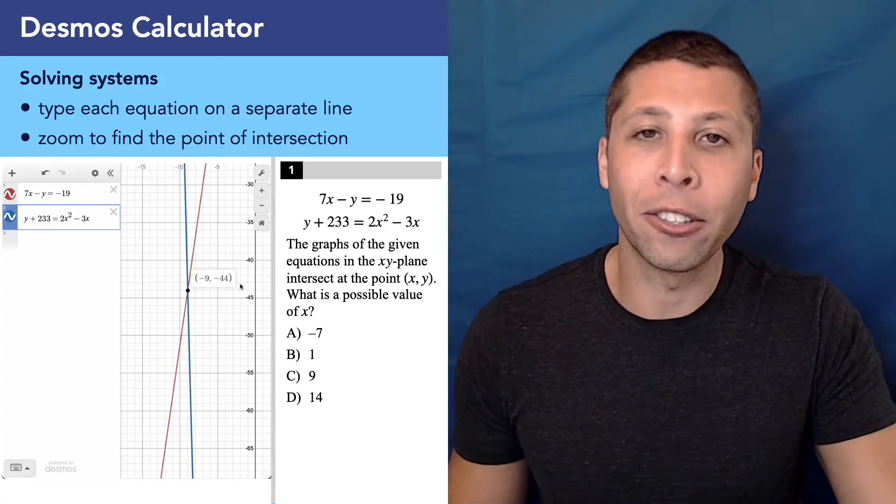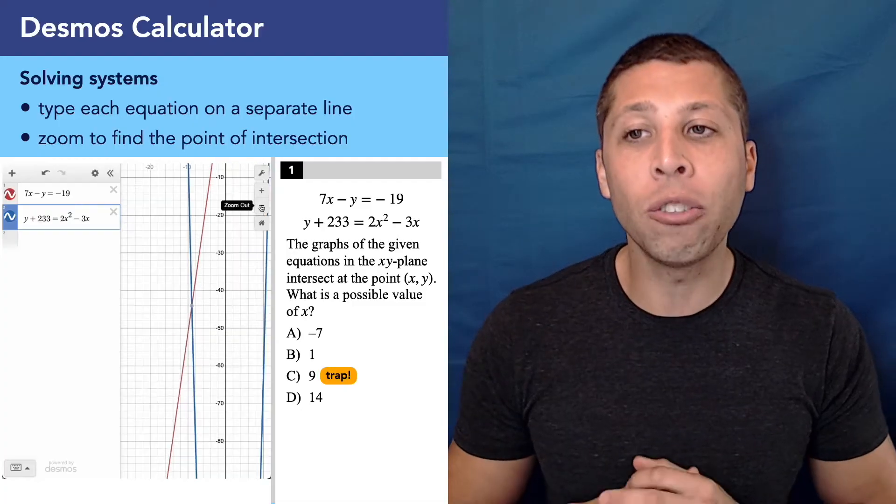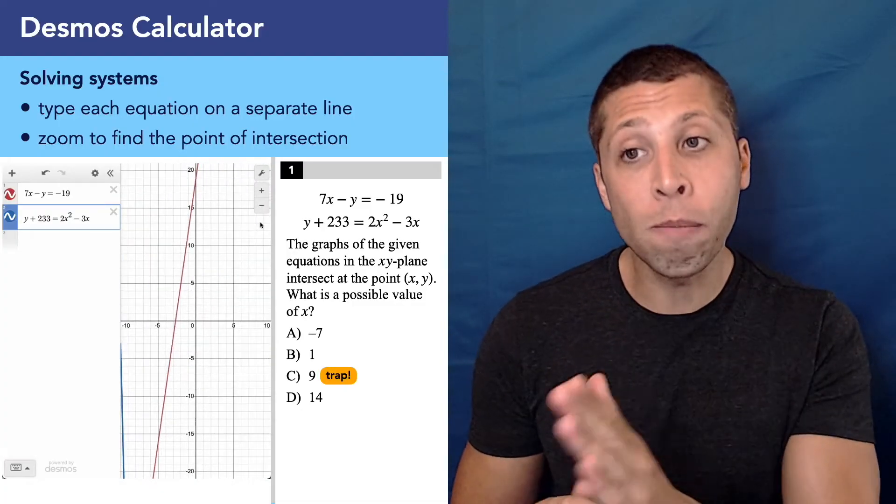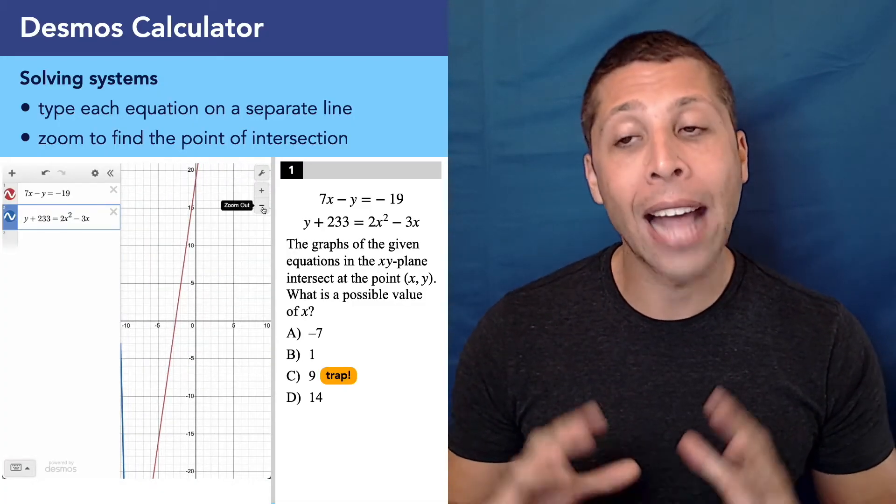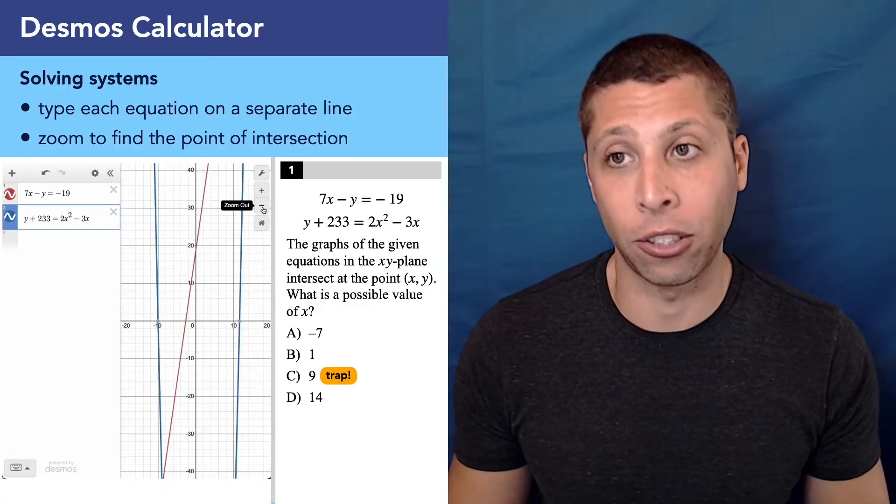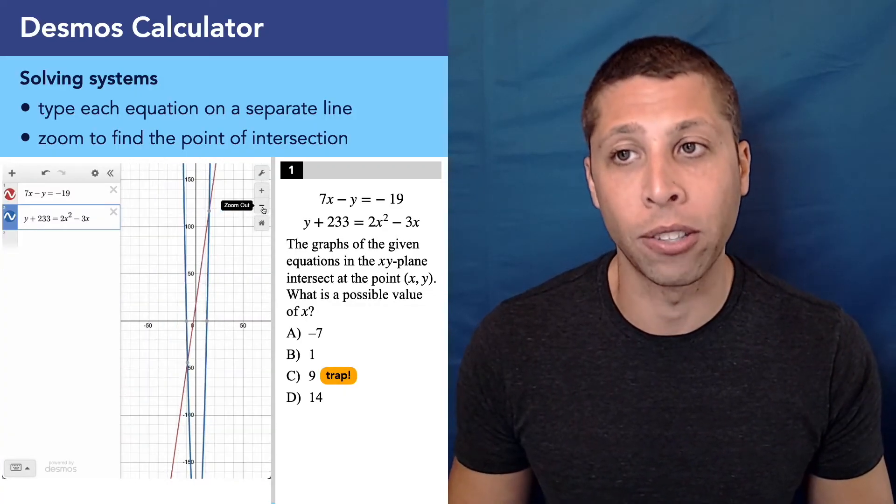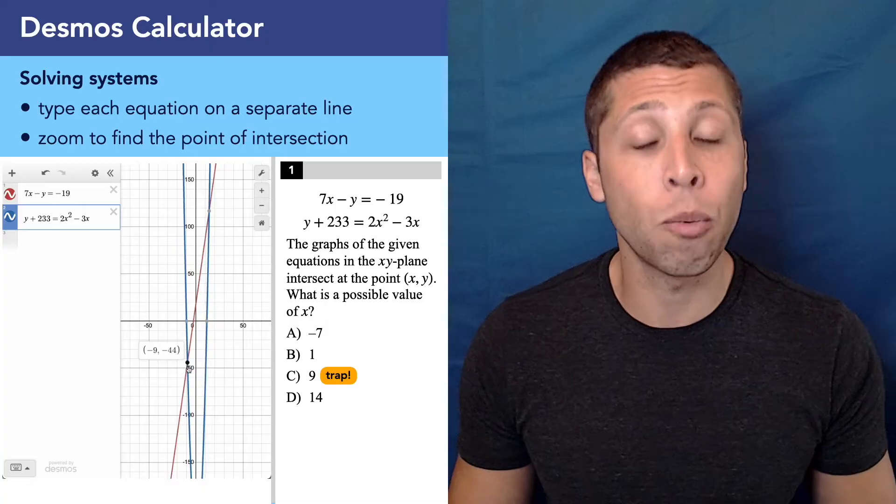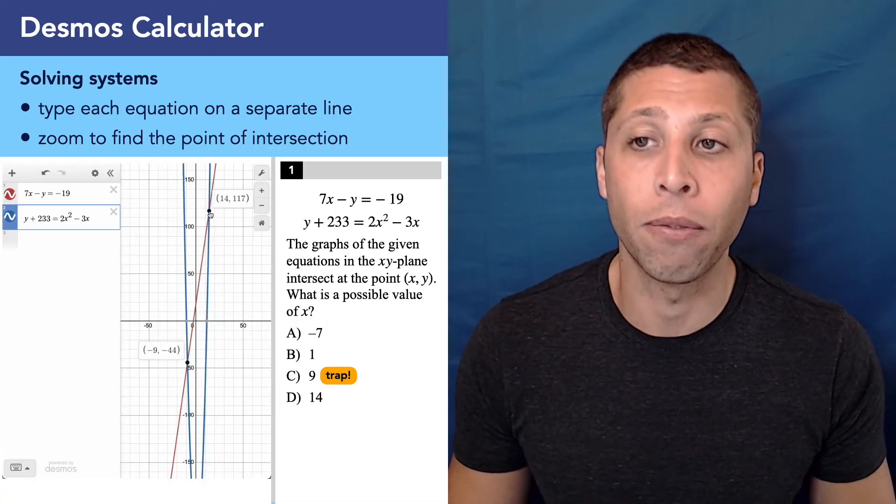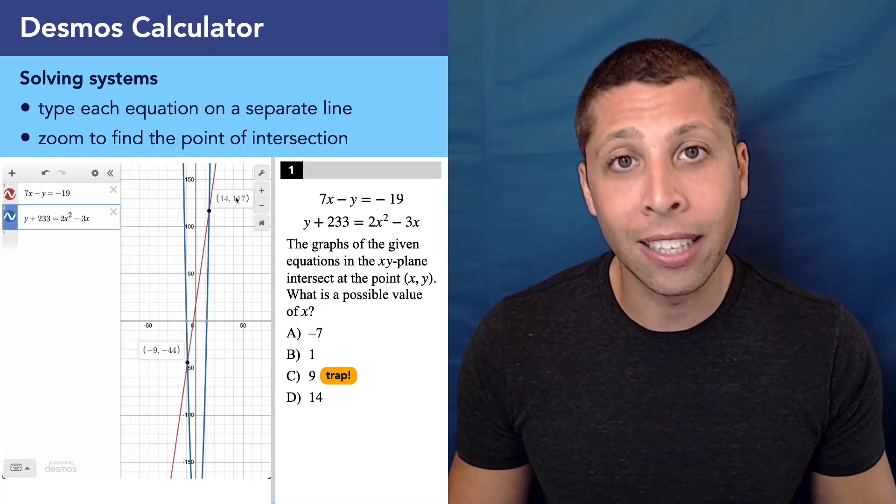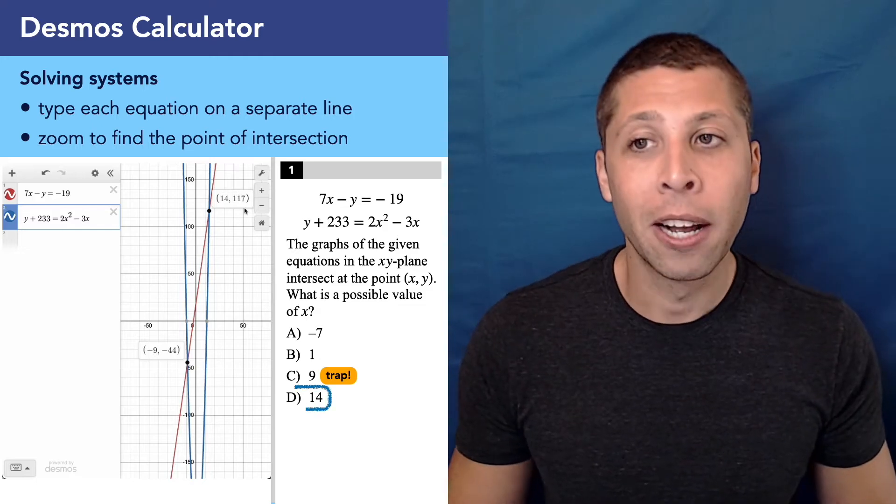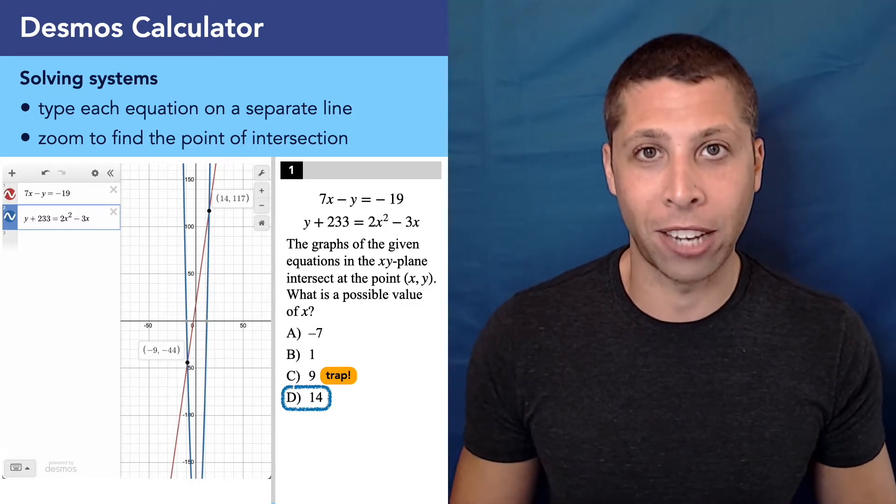So what's happening here though is they're trying to get you into a trap with choice C, so we should zoom out, or we can hit the home button to go back to the origin and now find another point of intersection that actually gives us an answer choice. And if we zoom out, we can see there's the one that we had before, negative nine, negative 44, and now 14 is the correct answer.